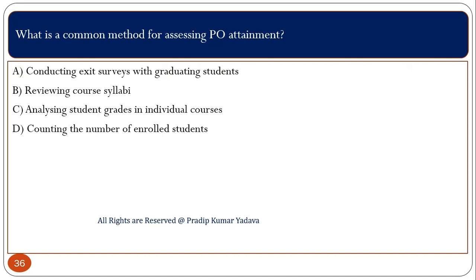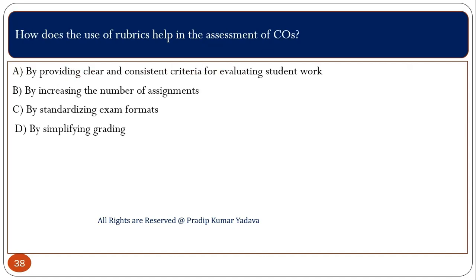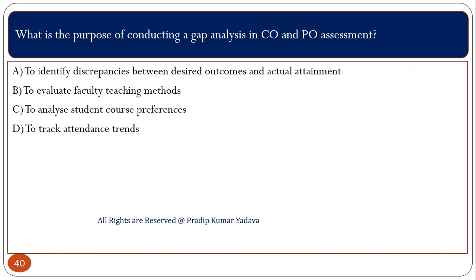How does the use of rubrics help in assessment? Rubrics help by providing clear and consistent criteria for evaluating student work. What is the purpose of conducting a gap analysis in CO and PO assessment? Gap analysis is done to identify the discrepancies between desired outcomes and actual outcomes. For example, if our desired attainment is 2.5 and we are getting only 2.2, there is a gap. To identify this type of discrepancy, we conduct gap analysis.